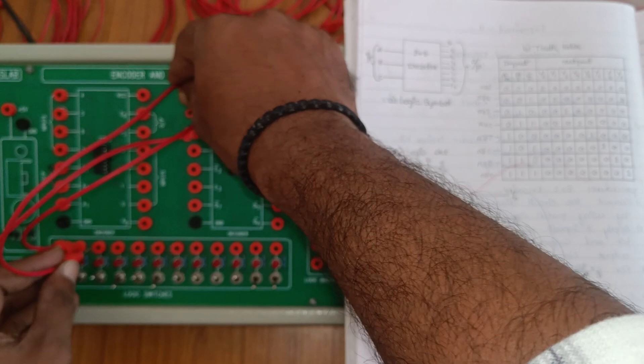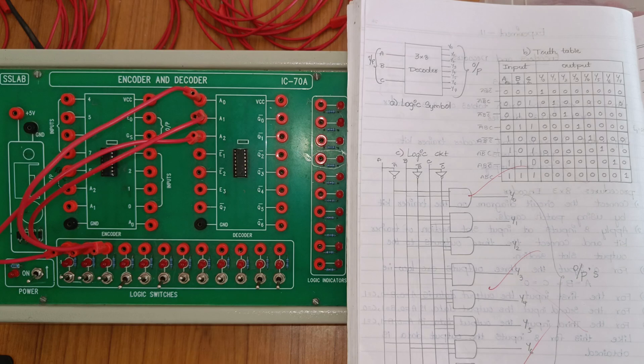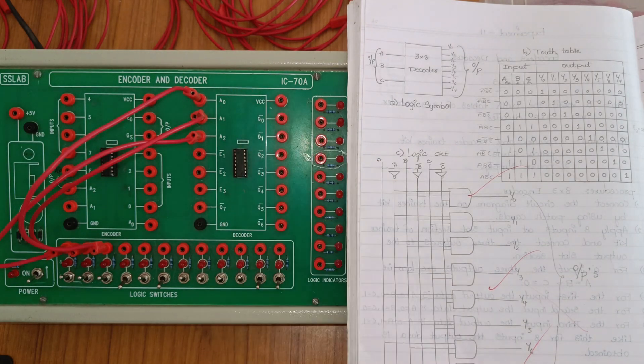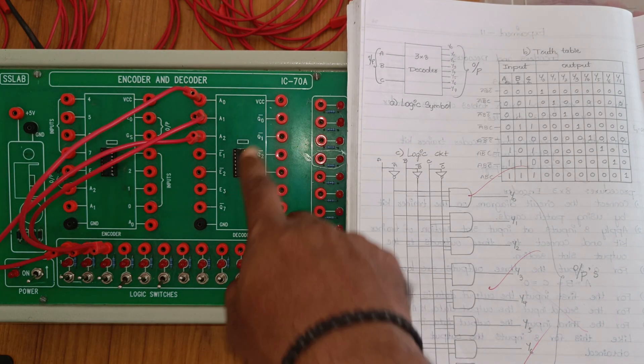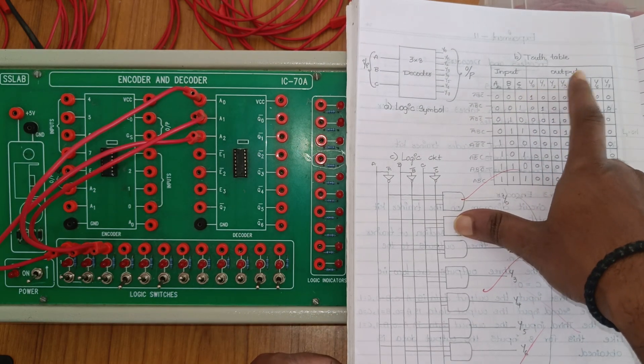A1, A0 - these are the three binary inputs. Next, we require eight outputs. The eight outputs are Q0 bar through Q7. In the truth table we're using Y0, Y1, Y2, Y3, Y4...